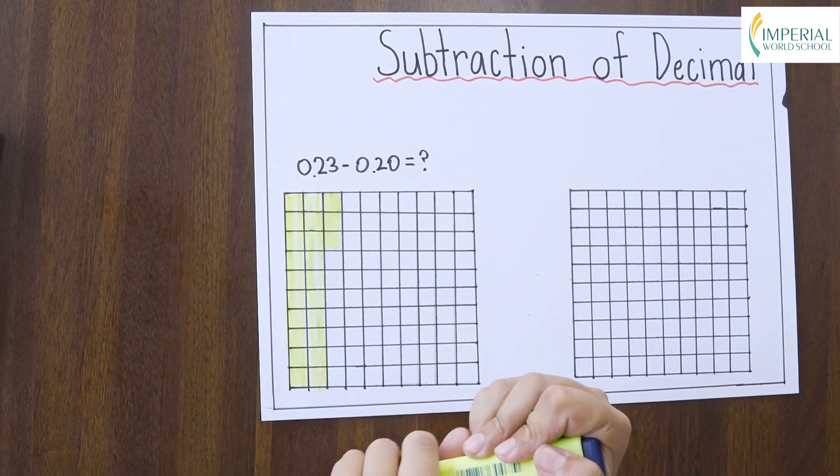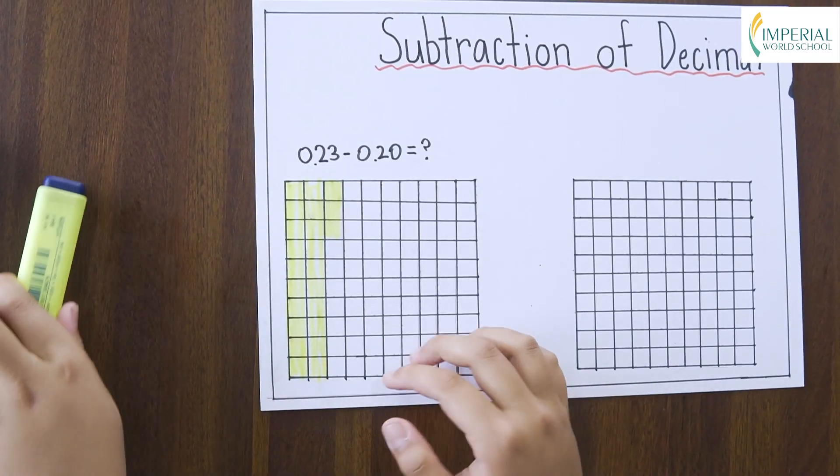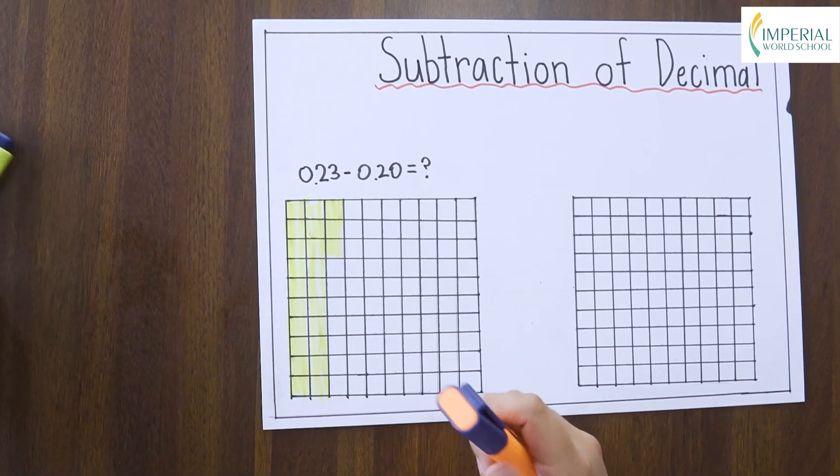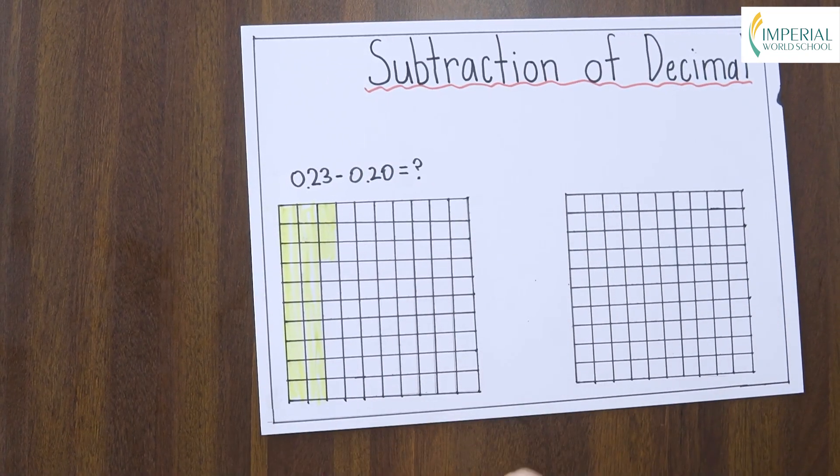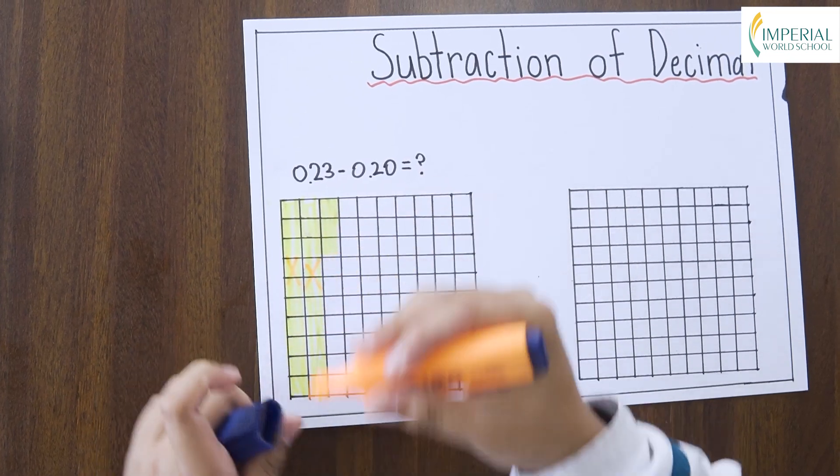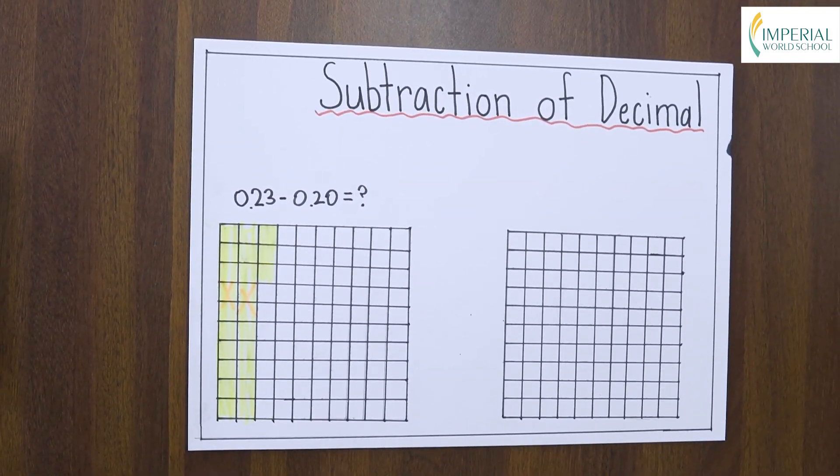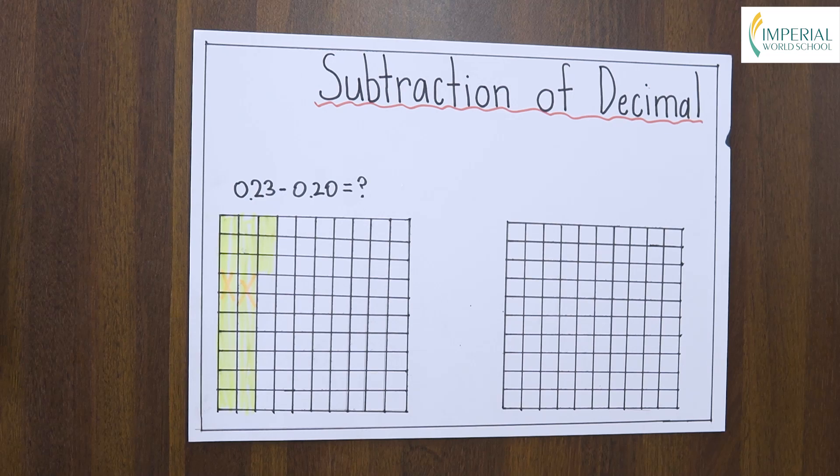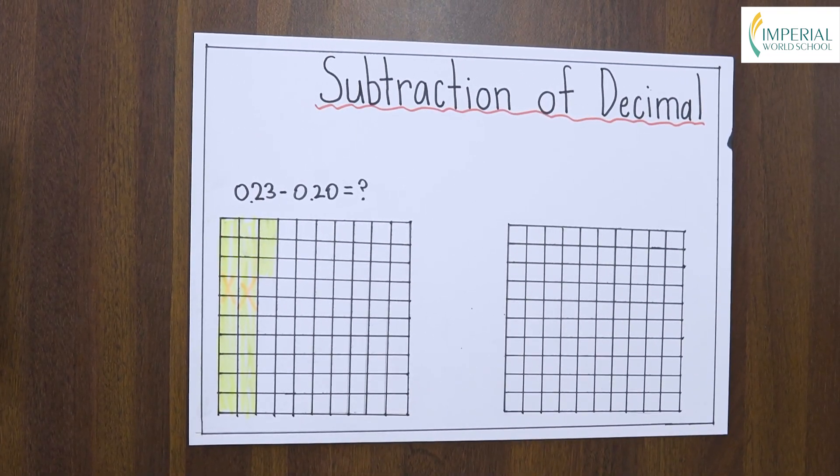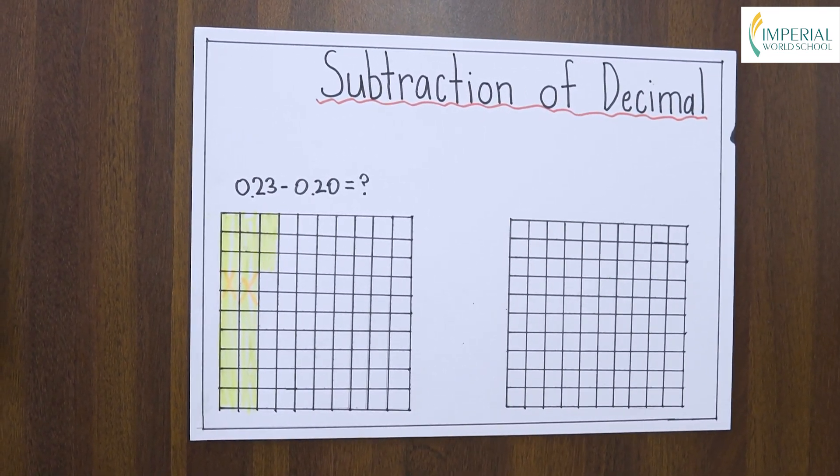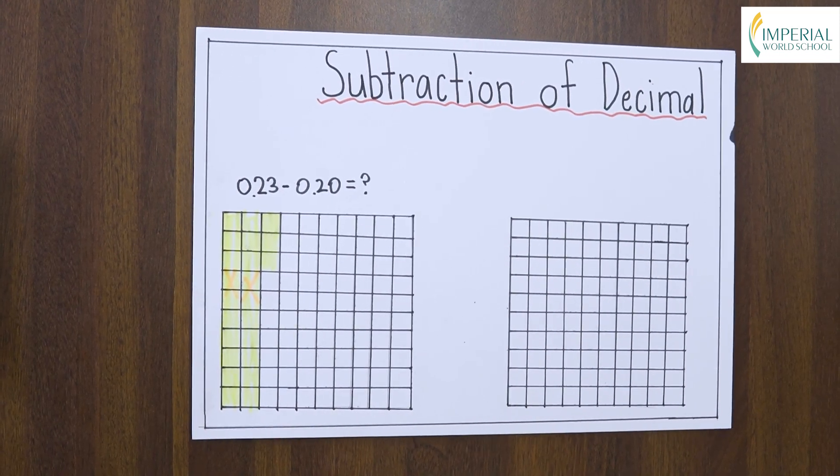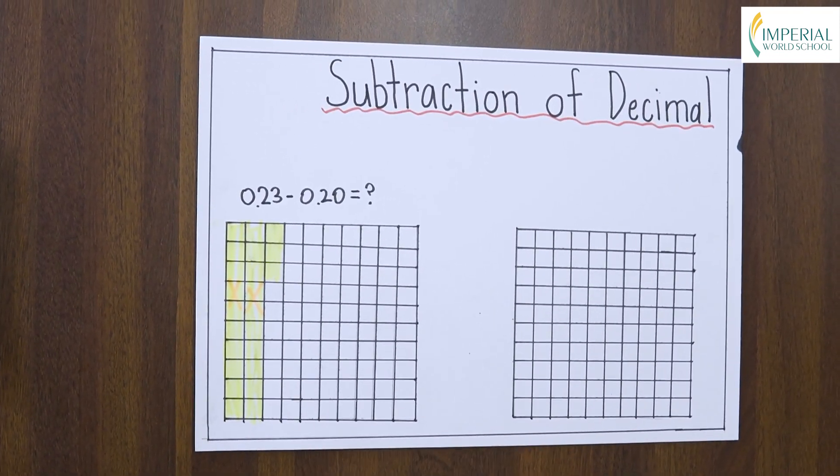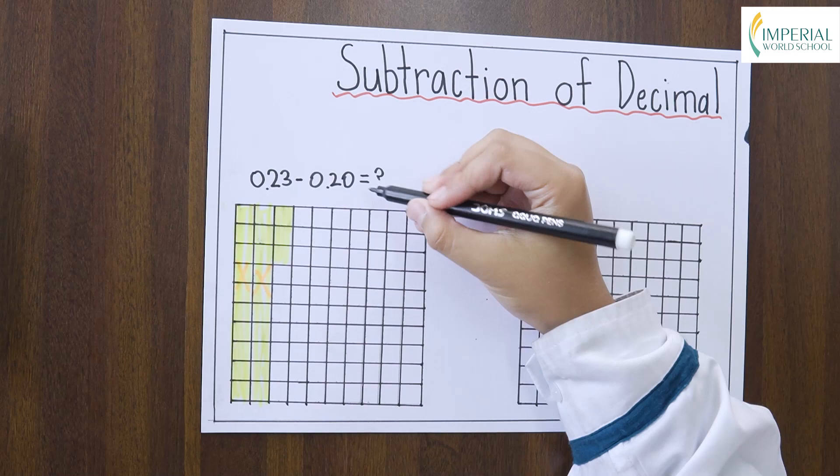Now, to subtract it we have to cancel two tenths because there is two tenths here. So as you can see, since we cancelled out the two tenths, the remaining three will be our difference. But since three is in the hundredth place, the answer will be 0.03.